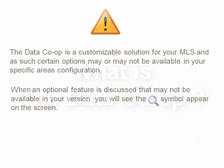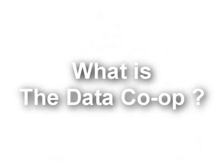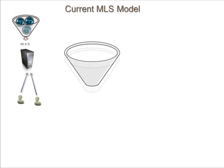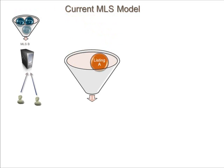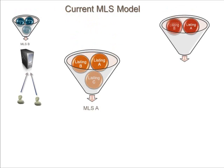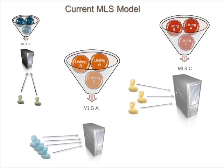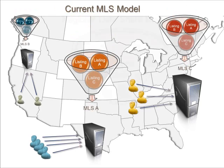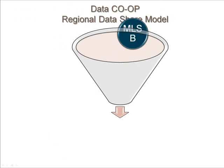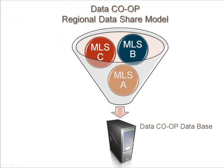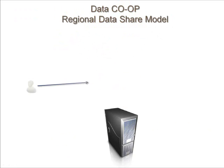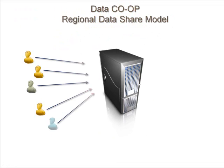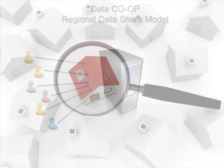Let's begin. The first question you might have is: what is the Data Co-op? Currently you enter listing data into a database that is shared with other agents in your immediate area. This action is repeated all over the country from one MLS to another. The Data Co-op works as a repository for yours and neighboring MLSs looking to share listing data. Each MLS contributes their listings to the pool of listings in the database, and that database is then open to all that contribute and or choose to also provide access.